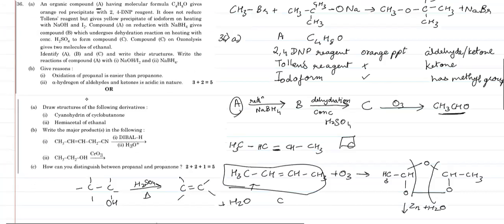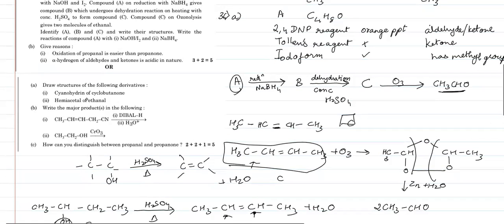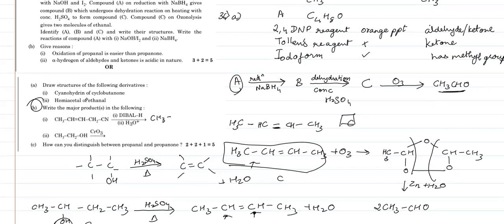The next question: write the major products. We have a nitrile group with a double bond, reacting with DIBAL-H and H3O+. This is a direct synthesis of an aldehyde from a nitrile. DIBAL-H does not affect the double bond, so the product is CH3-CH=CH-CH2-CHO (the nitrile is reduced to an aldehyde while the double bond is preserved).